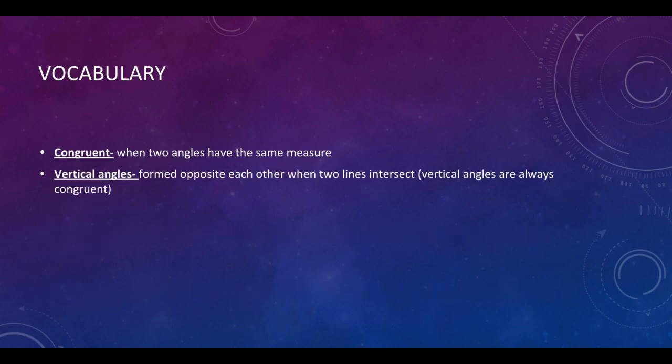Vertical angles, and I'll talk a little bit more on the next slide, are opposite from each other, and they are always congruent. And again, I'll come back to vertical angles, but take a moment, pause the video whenever you need to so you can write down those definitions. They're opposite angles when two lines intersect, and vertical angles are always congruent.